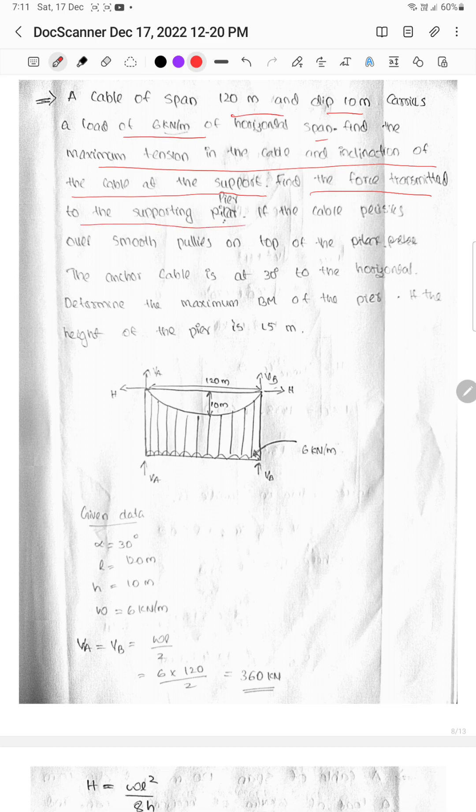Find the force transmitted to the supporting pier if the cable passes over smooth pulleys on top of the pier. The anchor cable is at 30 degrees to the horizontal. Determine the maximum bending moment to the pier if the height of the pier is 15 meters.